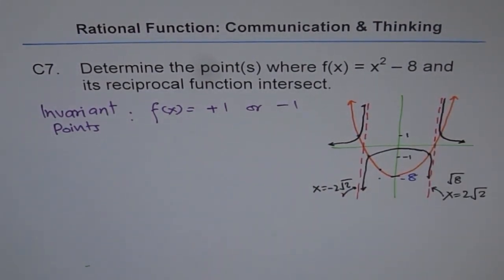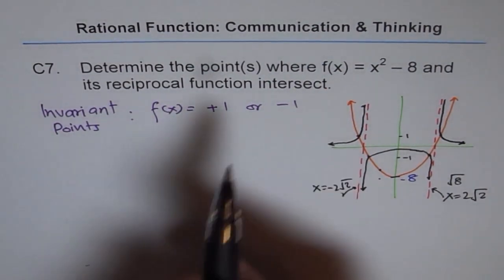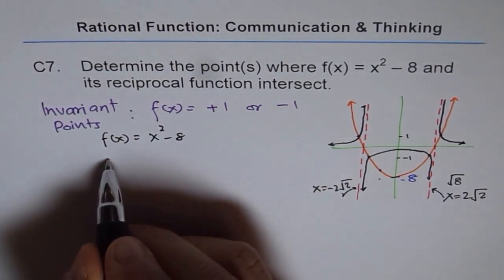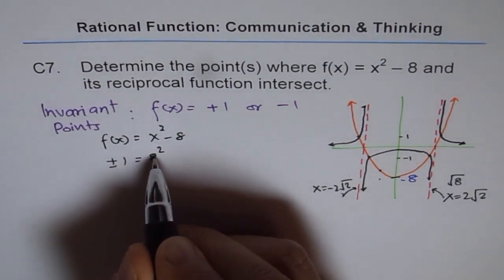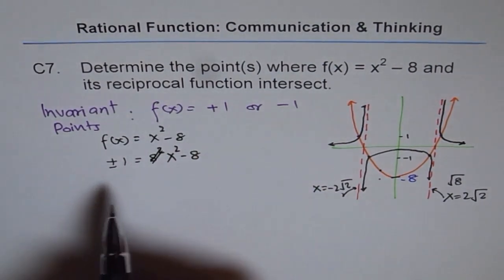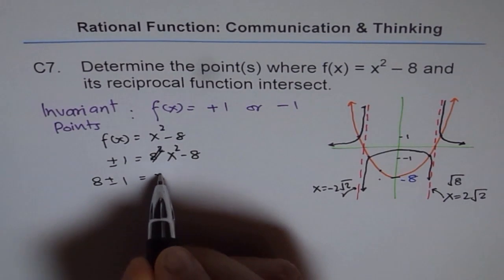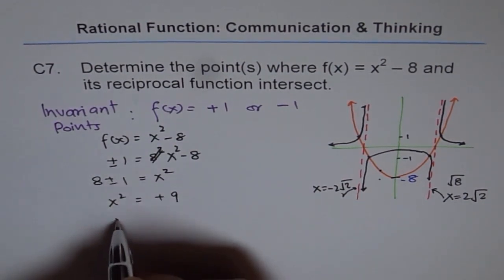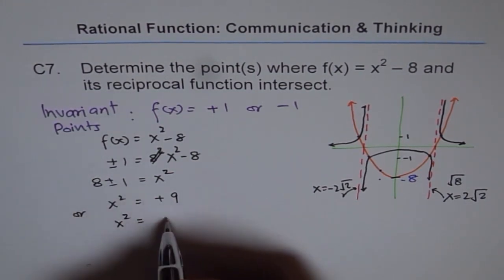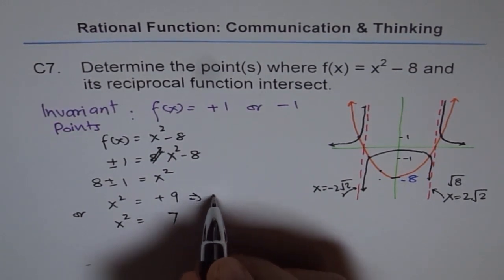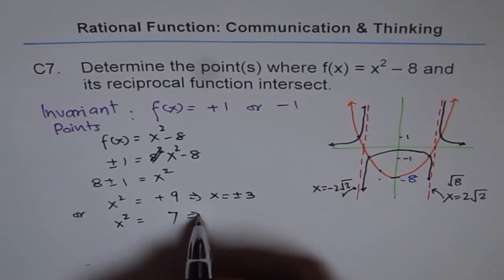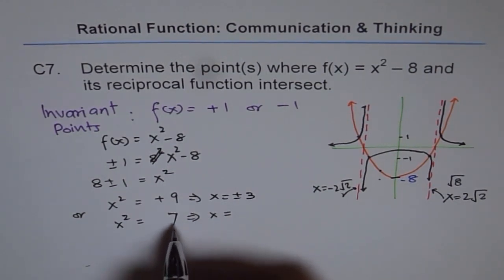We see clearly they intersect at the point where f(x) is equal to 1. Let us figure out when f(x) equals 1. We know f(x) equals x squared minus 8, and we need plus or minus 1. So: plus or minus 1 equals x squared minus 8. Bringing 8 to the other side: x squared equals 8 plus 1 equals 9, or x squared equals 8 minus 1 equals 7. This gives us x equals plus or minus 3, and x equals plus or minus square root of 7.